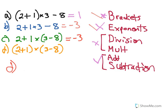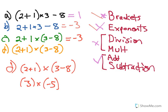And lastly, part D, 2 brackets. So we have a bracket times another bracket, but before we do the times, we have to solve what's inside each of those brackets. 2 plus 1 is 3, times 3 minus 8 is negative 5. Brackets are solved, now we can do the multiplication. 3 times negative 5 is negative 15.